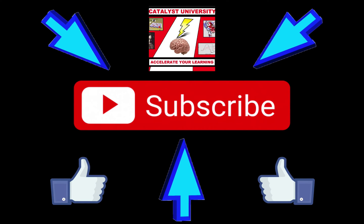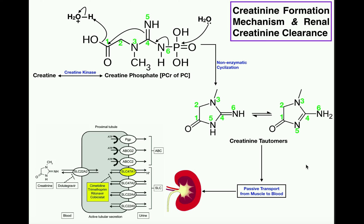Welcome back to Catalyst University. Please make sure to like this video and subscribe to my channel for future videos and notifications. In this video we're going to look at the formation of a muscle waste product called creatinine, which is formed from creatine, and then we're going to look at how it's excreted from the body through the kidneys.